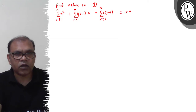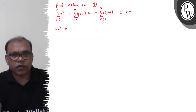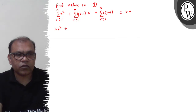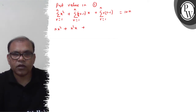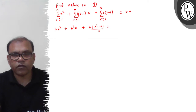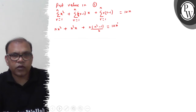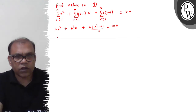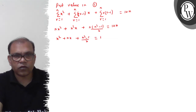Now putting the values in: summation of x² from r=1 to n gives nx². Summation of (2r-1)x gives n²x. Summation of r(r-1) gives n(n²-1)/3. So the full equation becomes: nx² + n²x + n(n²-1)/3 = 10n. Dividing through by n: x² + nx + (n²-1)/3 = 10.